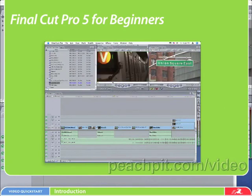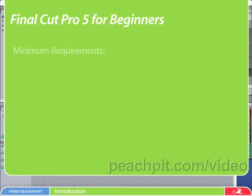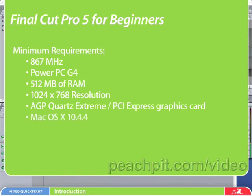Final Cut Pro requires an Apple computer for installation. Final Cut Pro 5 minimum requirements are an 867 MHz PowerPC G4, 512 MB of RAM, 1024x768 resolution, AGP Quartz Extreme or PCI Express graphics card, Mac OS 10.4.4, QuickTime 7.0.4, and 4 GB of disk space to install all applications.